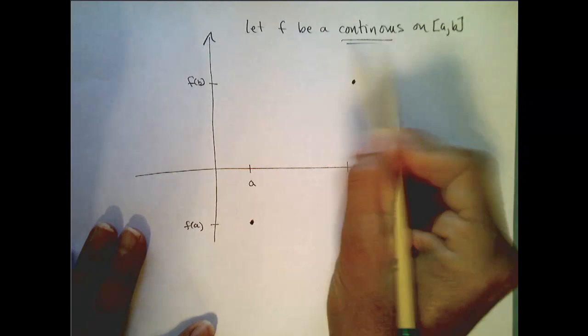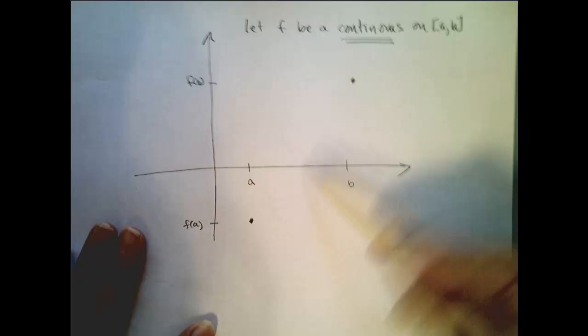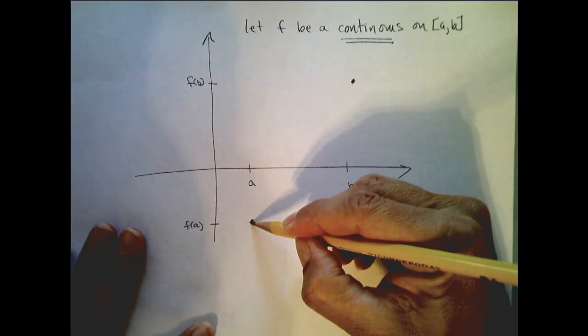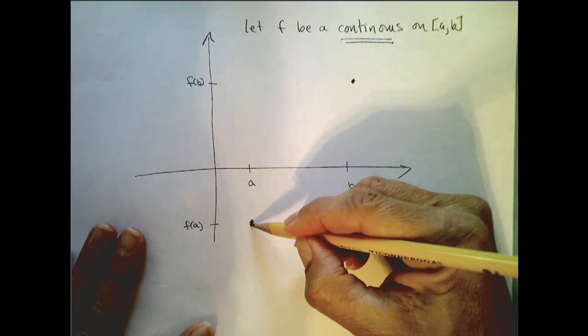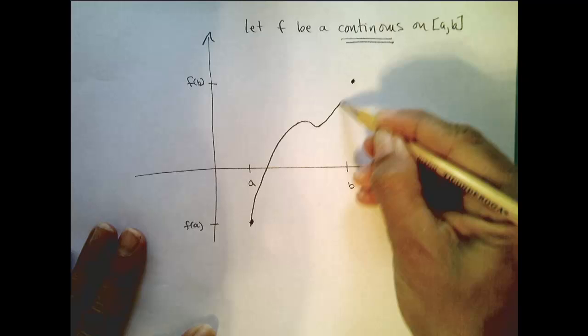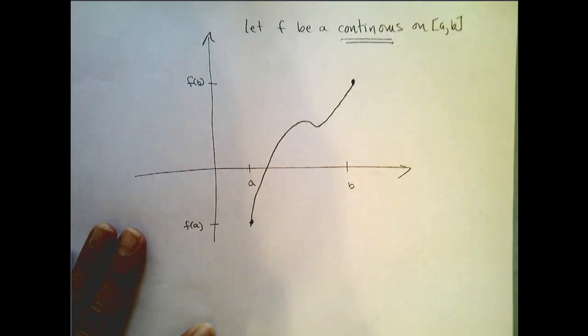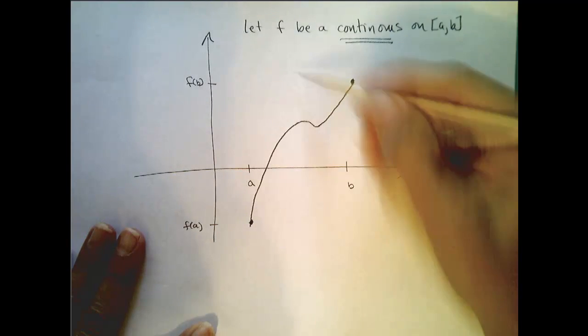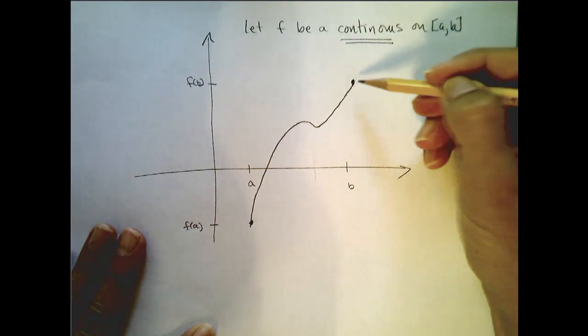So remember I said continuous. That never crosses the x-axis. Can you do it? Well, not if you want it to be continuous, and there's infinitely many ways you can do it. Let's say I do this.